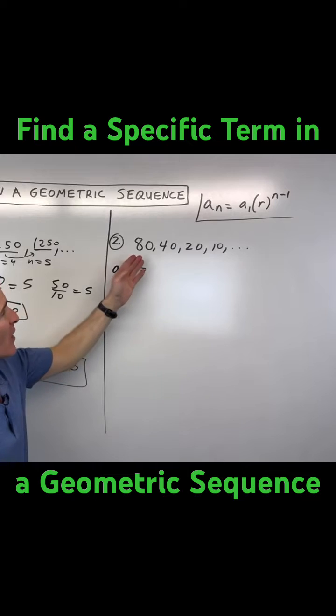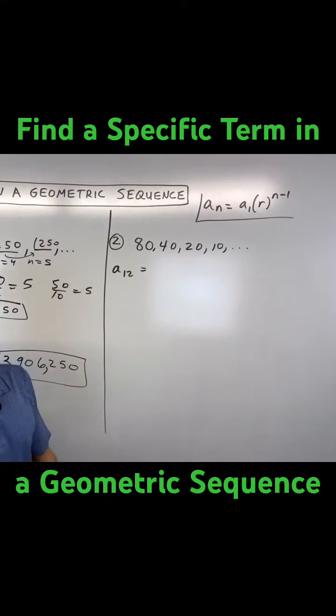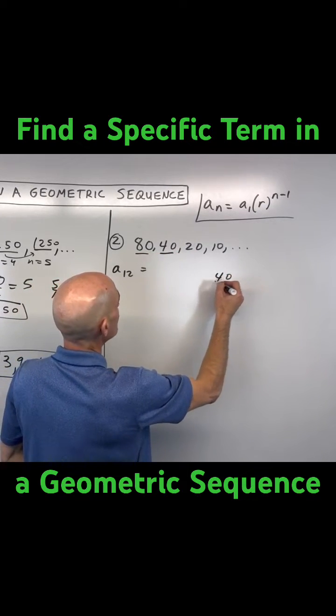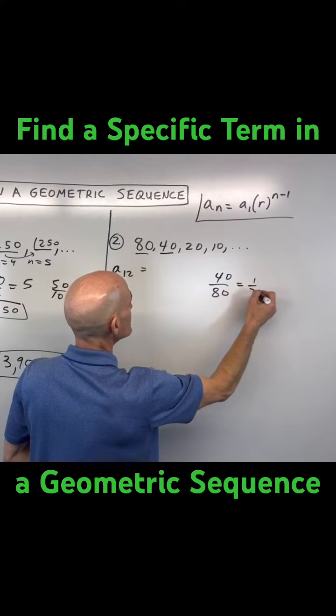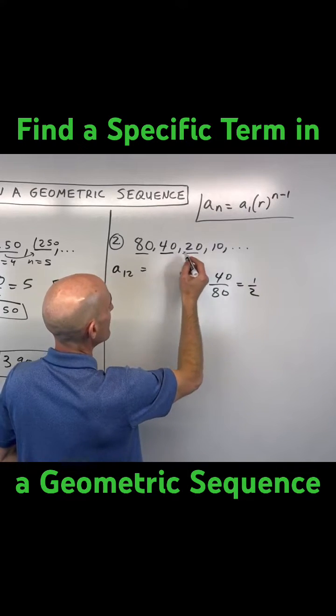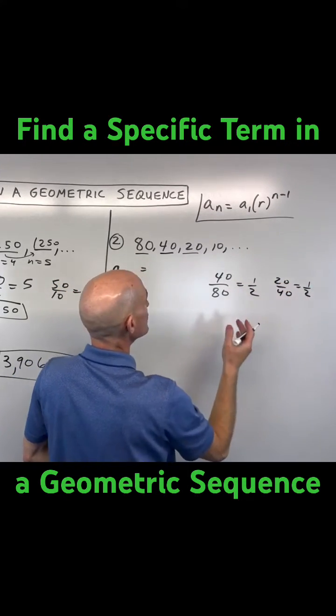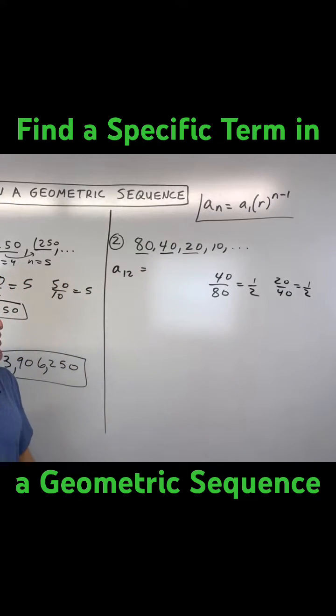So here you can see we're actually multiplying by 1 half. And if you want to verify that, or just make sure, take the term divided by the one before it. So 40 divided by 80, that reduces to 1 half. Or 20 divided by 40, that reduces to 1 half. And you can see you keep getting that same common ratio of 1 half.